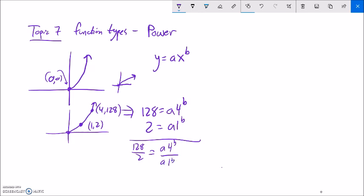128 divided by 2, that's 64. a divided by a divides out. 4 to the b divided by 1 to the b.